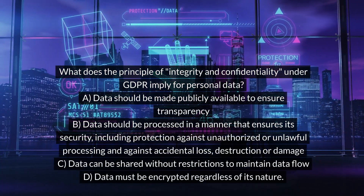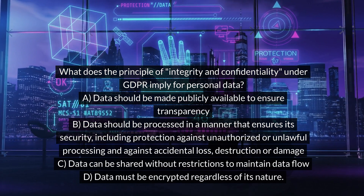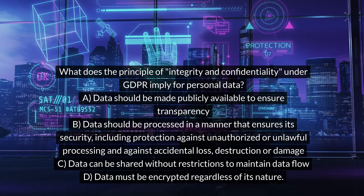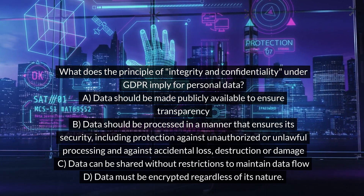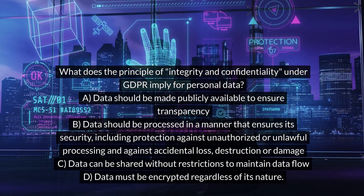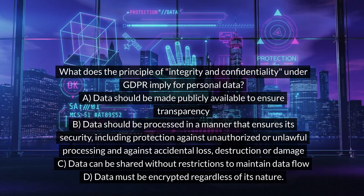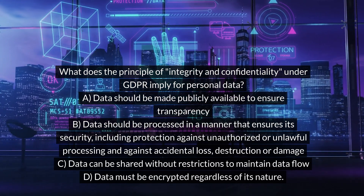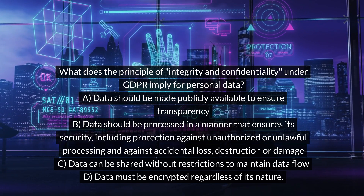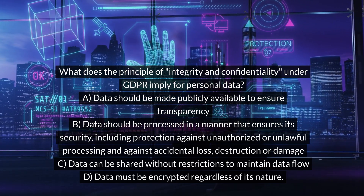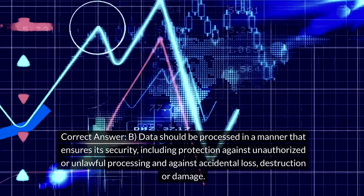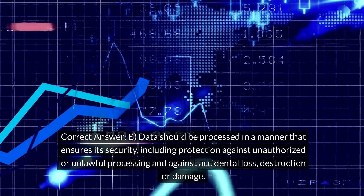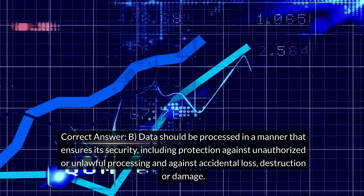What does the principle of integrity and confidentiality under GDPR imply for personal data? A. Data should be made publicly available to ensure transparency. B. Data should be processed in a manner that ensures its security, including protection against unauthorized or unlawful processing and against accidental loss, destruction or damage. C. Data can be shared without restrictions to maintain data flow. D. Data must be encrypted regardless of its nature. Correct answer: B. Data should be processed in a manner that ensures its security, including protection against unauthorized or unlawful processing and against accidental loss, destruction or damage.